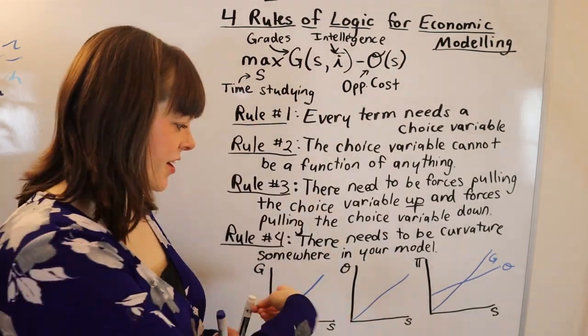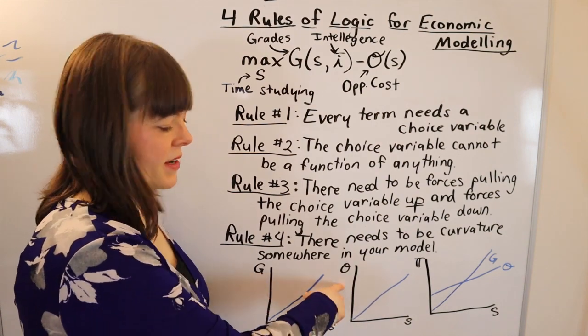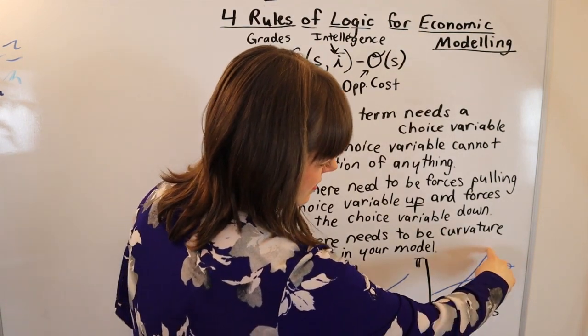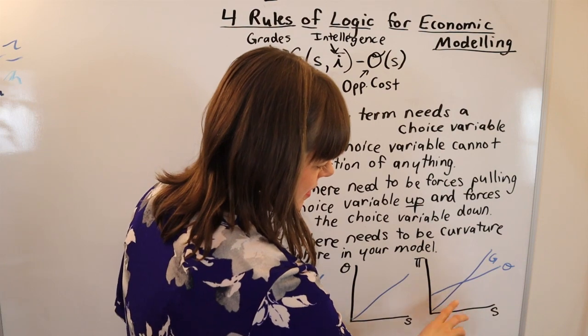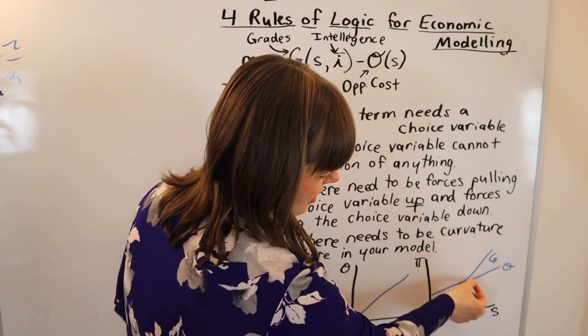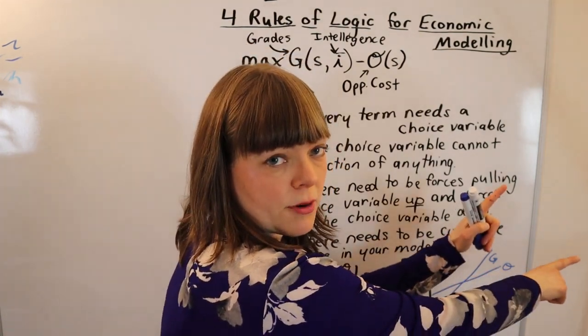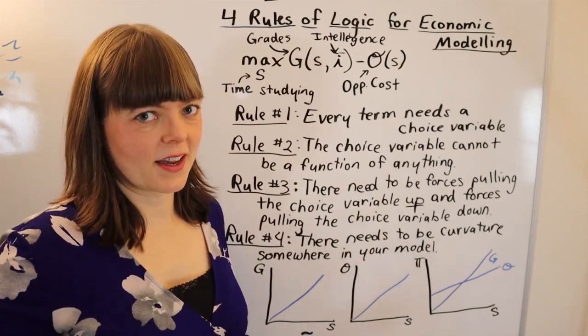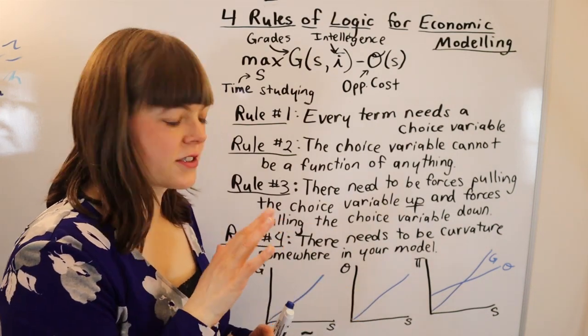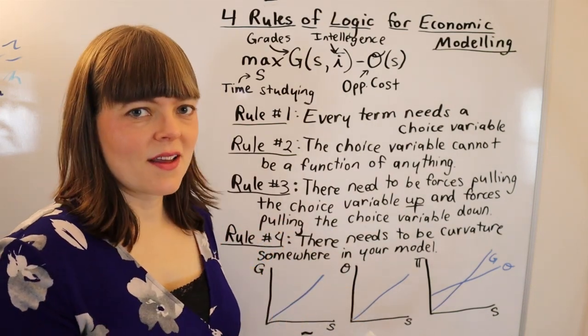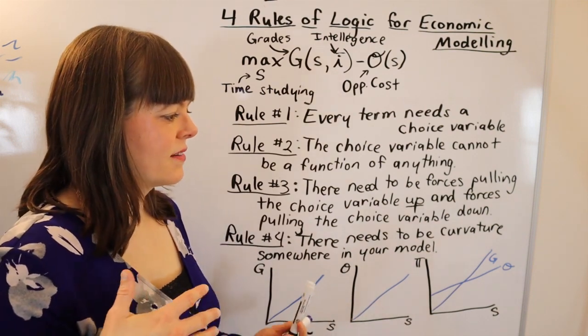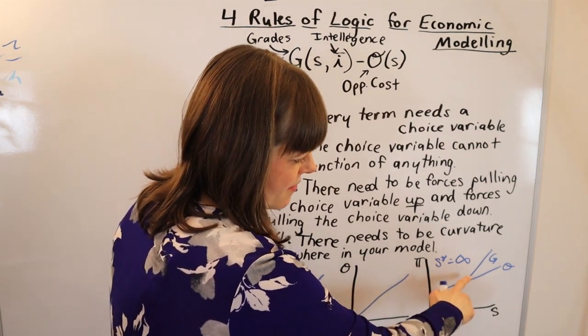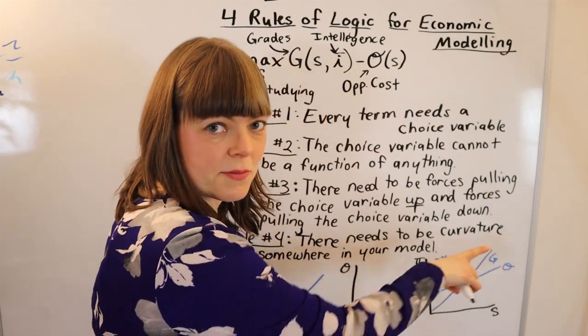If both graphs are linear, then how do you optimize grades minus opportunity cost? It's either going to be zero or infinity. The way I've drawn it here, with the grades line—the linear grades graph being steeper than opportunity costs—you can tell that grades minus opportunity cost is just going to get bigger and bigger forever. So if those are our graphs, the optimal choice for us is infinity. And if I drew it the reverse way where opportunity cost was steeper and grades were less steep, then the optimal choice would be S equals zero. Just to make that clear here, the optimal choice of time spent studying is infinite because the distance between these lines gets bigger and bigger forever.